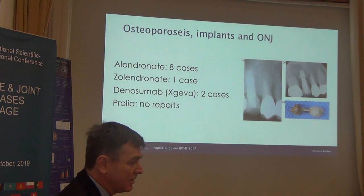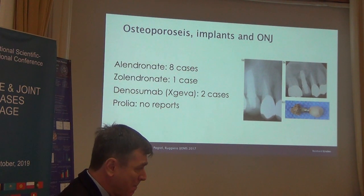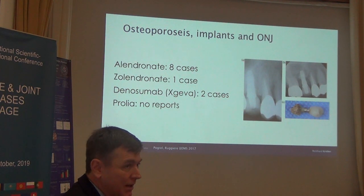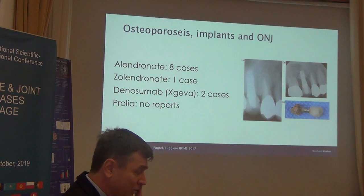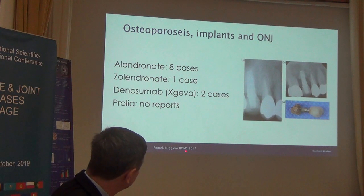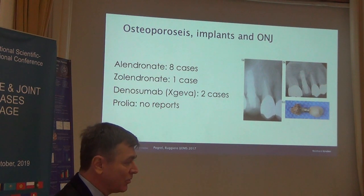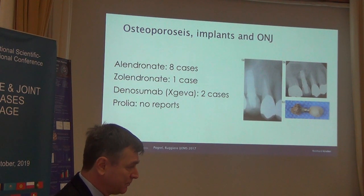Of course, we also have the big issue of osteonecrosis of the jaw. When cases are very rare, it is not a big problem. Osteonecrosis of the jaw was first described in 2003, and from reports up to 2017, we have only eight cases, one case, two cases — all from non-controlled studies, just case reports. I think osteonecrosis is not a major concern in implant dentistry, according to the data.